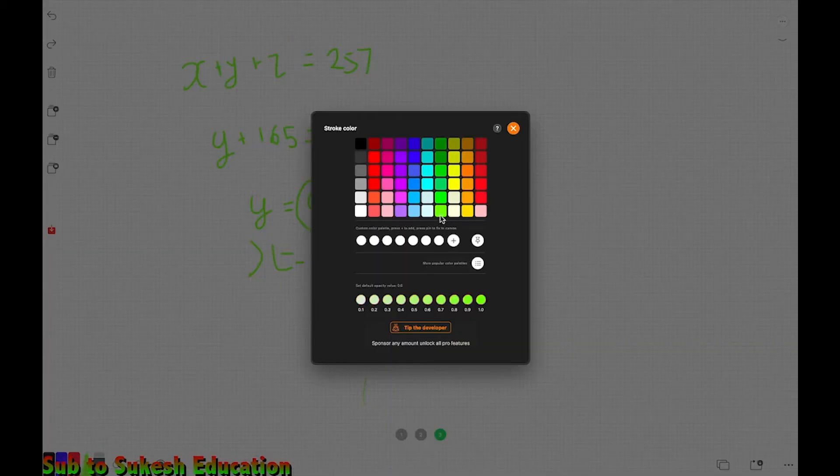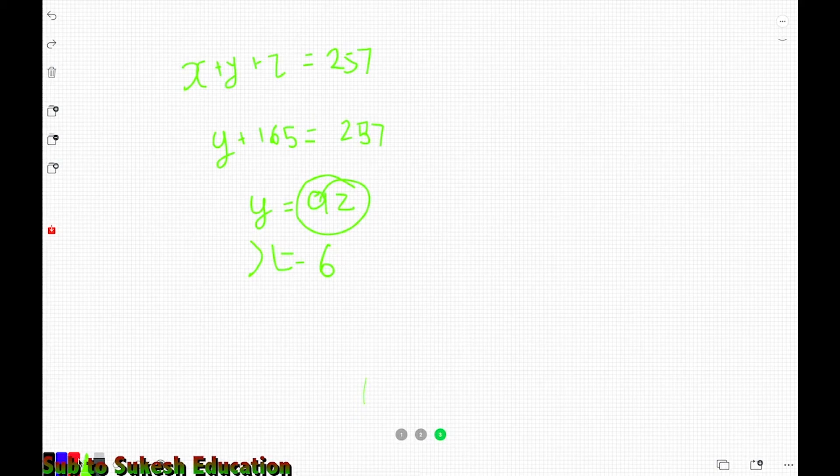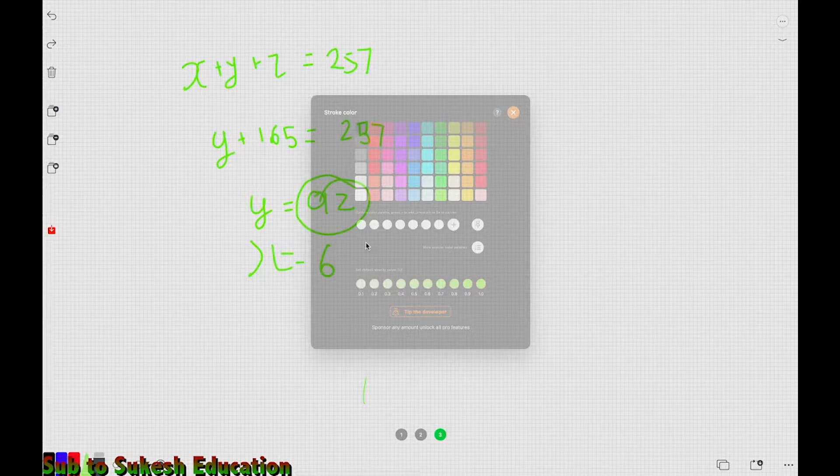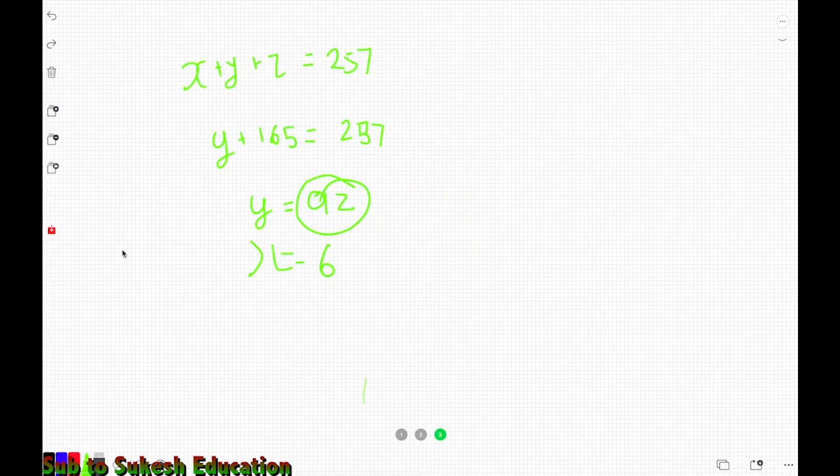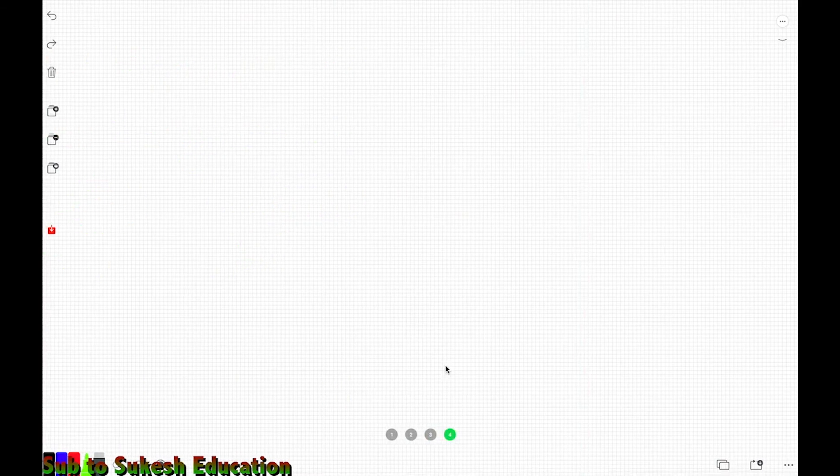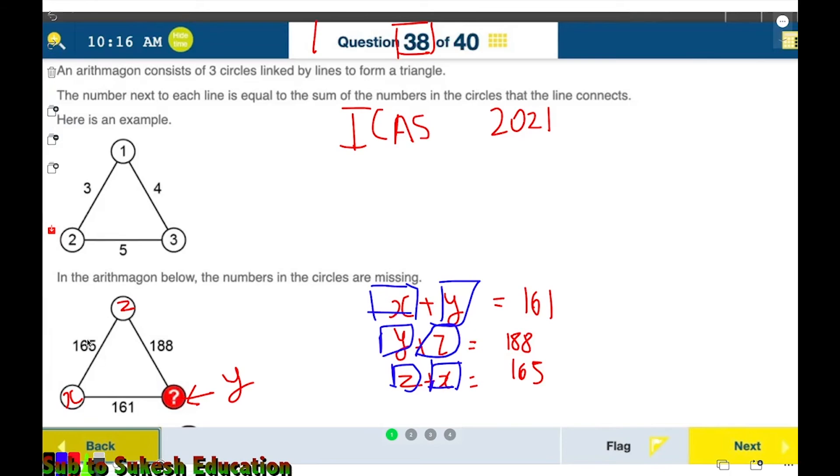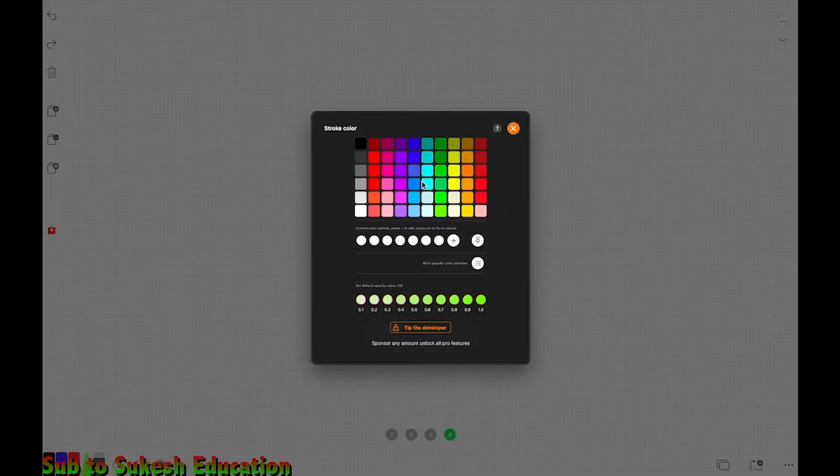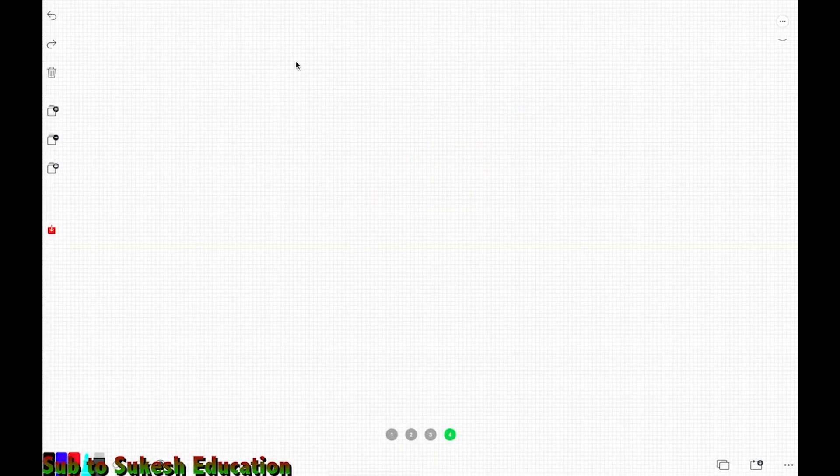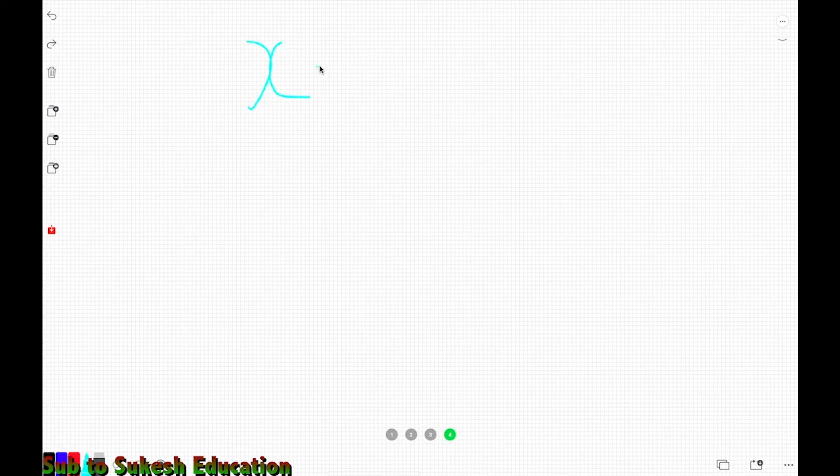Just to finish off the problem, even though we already got our answer, we can find the value of z too. We know x plus y plus z equals 257, and x plus y is 161.